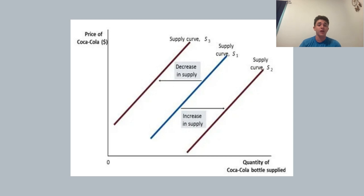However, on the other end of that, if we see a competitive company like Pepsi pull out of the soft drink industry, then there would be a much higher demand for Coca-Cola and it would move from the S1 to S2.